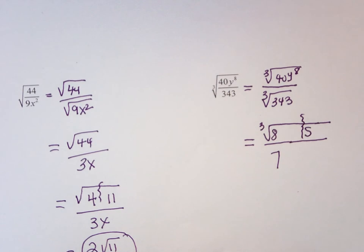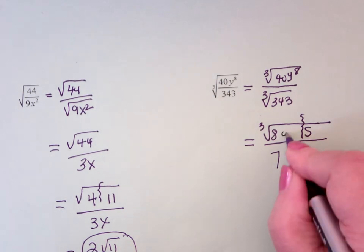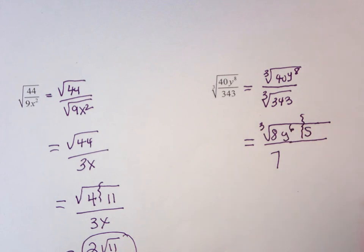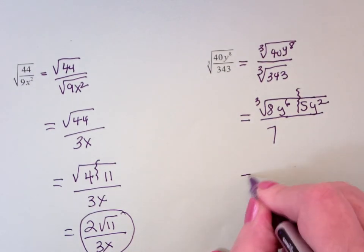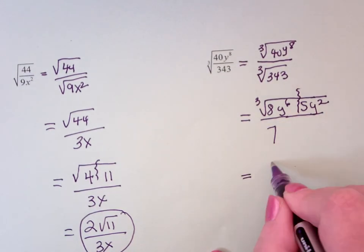The cube in y to the 8th is y to the 6. I have 8 of them, so there are 2 left over. So, cube root of 8 is? 2.